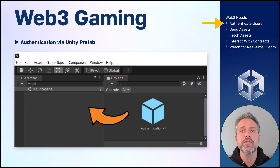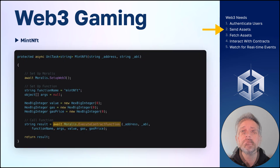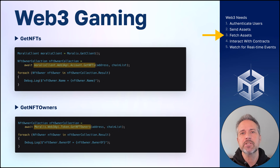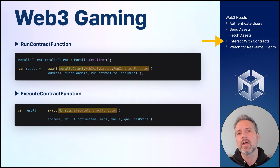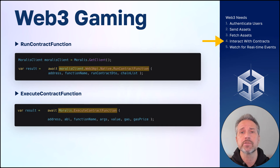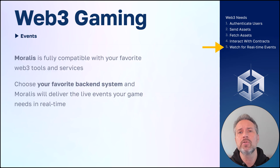To authenticate users with Morales, use the authentication kit prefab — drag that into your scene and your authentication is handled. To send assets with Morales, use the execute contract function — for example, to mint an NFT. To fetch assets from the blockchain, Morales offers many options including get NFTs and get NFT owners. To interact with contracts, Morales offers run contract function for read operations and execute contract function for read and write operations. To watch for real-time events, Morales is fully compatible with your favorite Web3 tools, so you can connect to your favorite backend and receive live events in real-time.